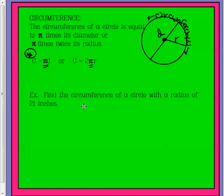Let's look at an example. Find the circumference, C, of a circle with a radius of 21 inches. Should we use this formula or this formula? Well, this one has radius, so it would make most sense to write this formula down.